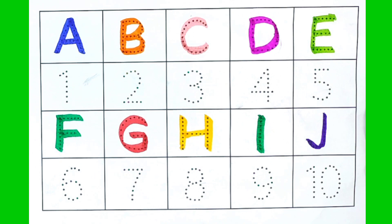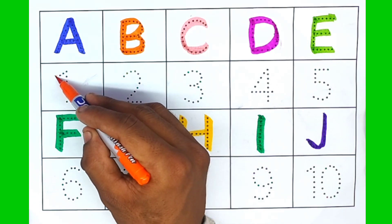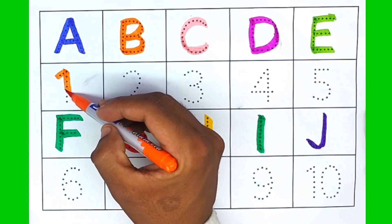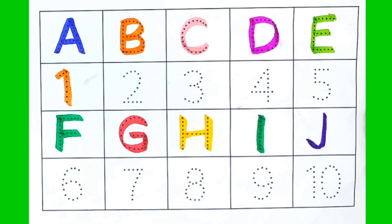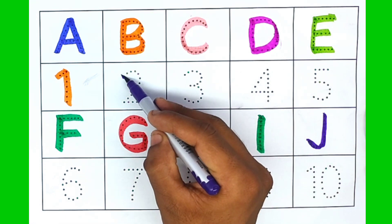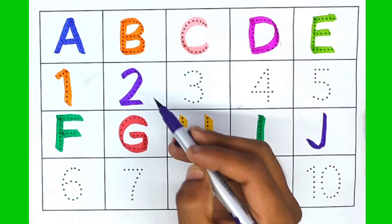Counting number. Orange color, number one. Purple color, number two.